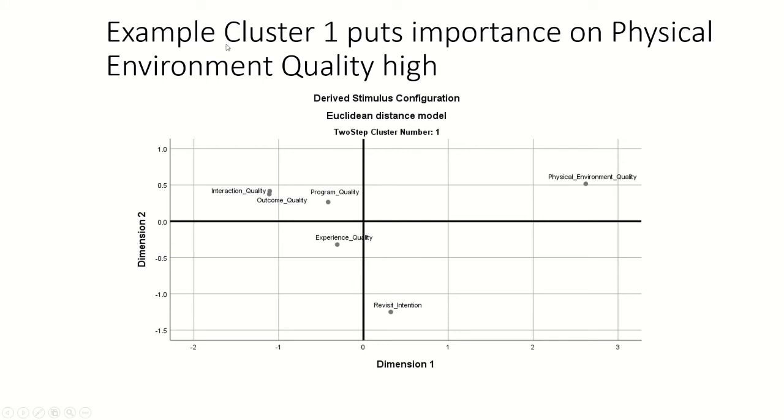If you notice, this one is the Euclidean distance for cluster 1. Look at cluster 1 here. What is right at the very corner at the top? It is actually physical environment quality. For cluster 1, they put very high importance on physical environment quality. So the people who visit Sunway Lagoon actually put physical environment quality quite high. You also notice that the revisit intention is very low, which goes to show that probably this cluster of people found that the physical environment was not so good because they placed so much hope on it that their revisit intention is so low.